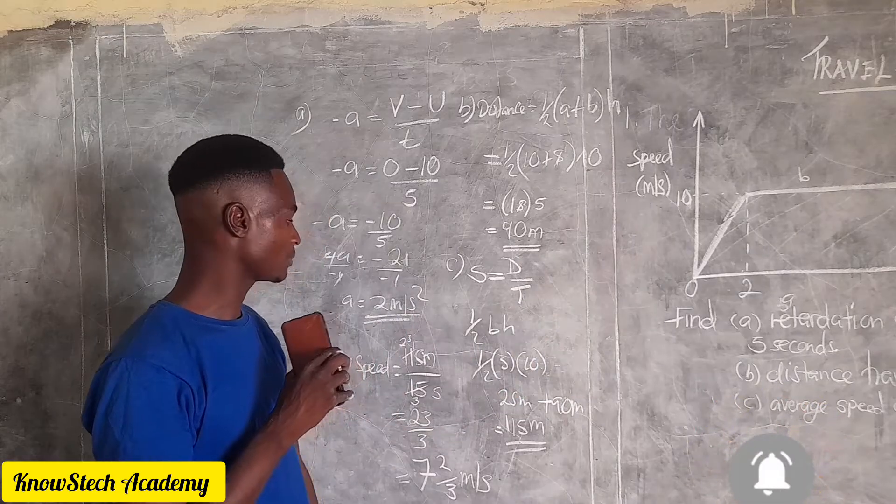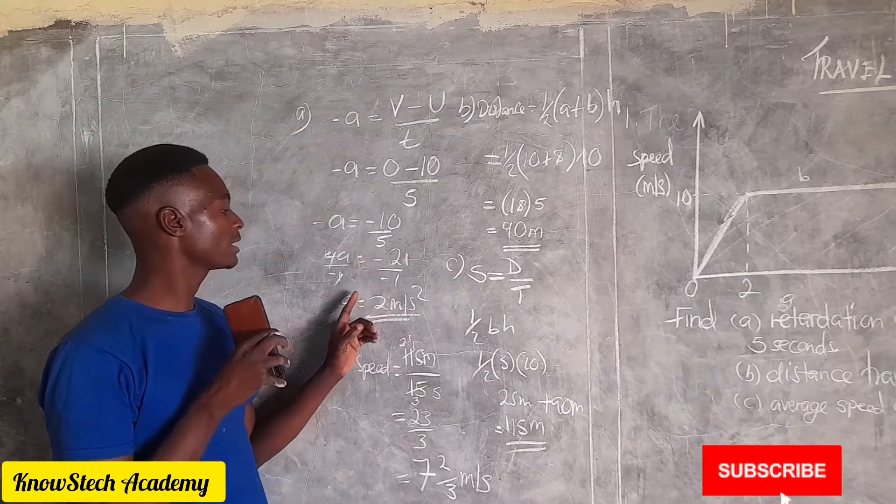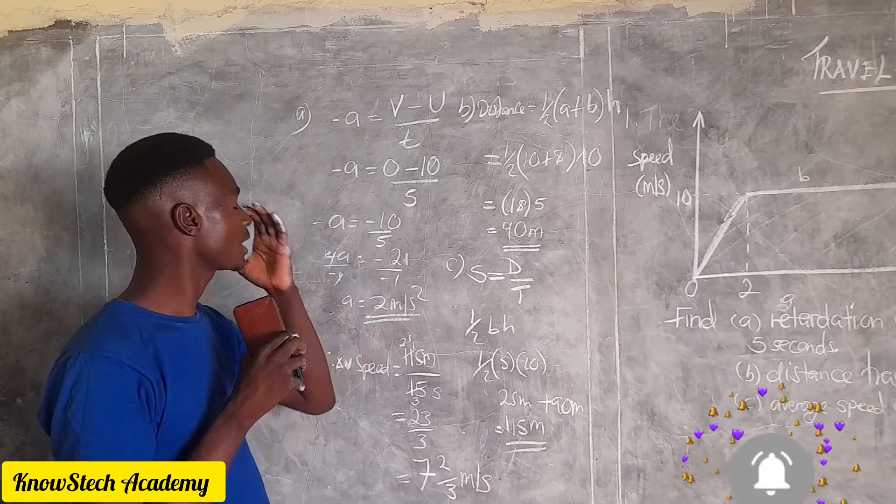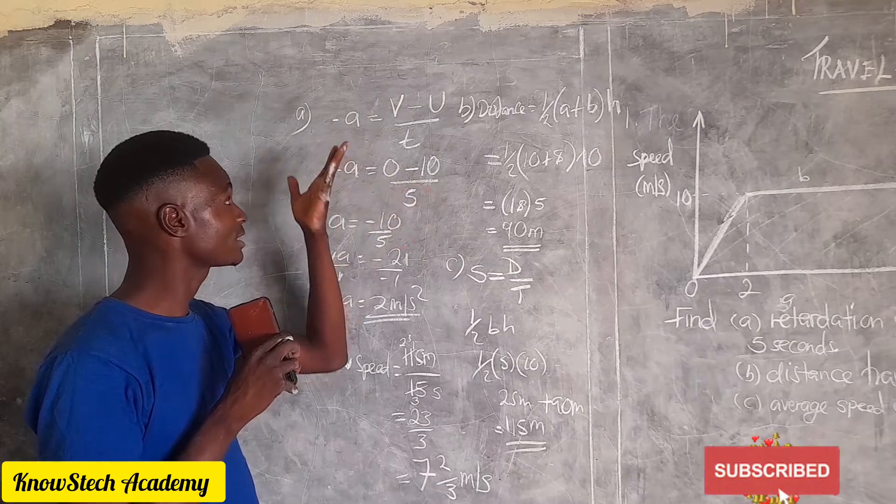Then when here you can also leave your answer as negative two meters per second squared, but as long as we've shown here that it's negative acceleration, it's fine.